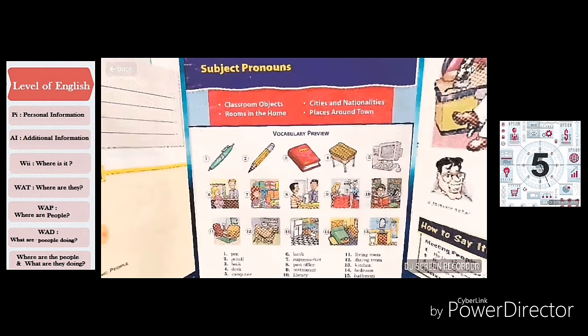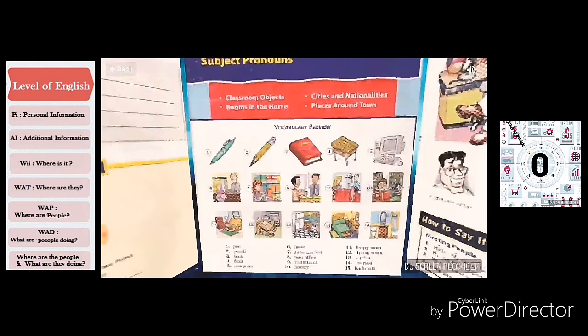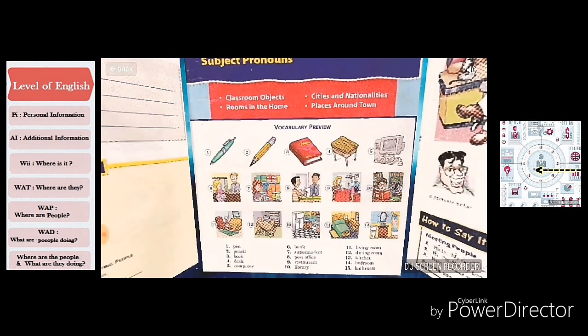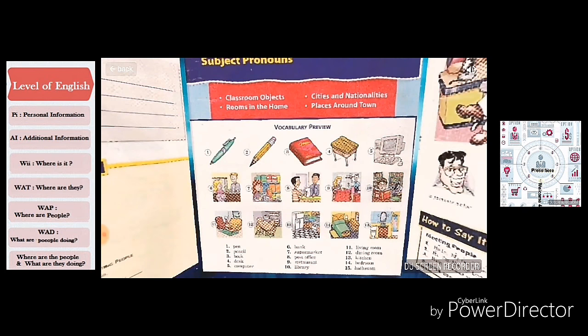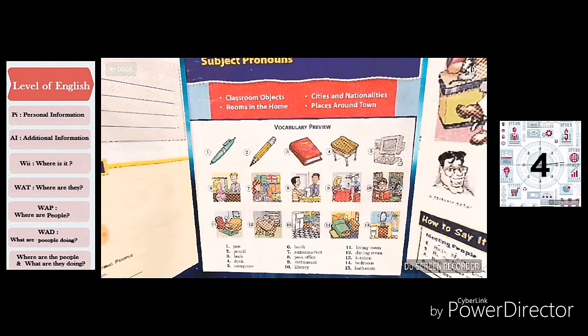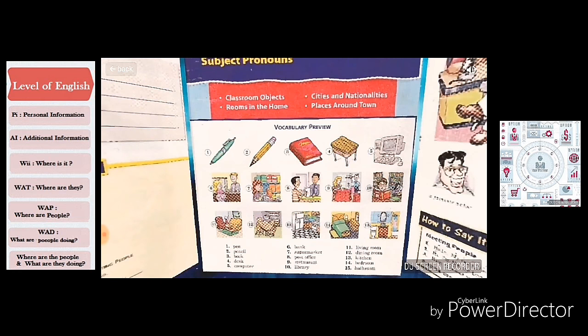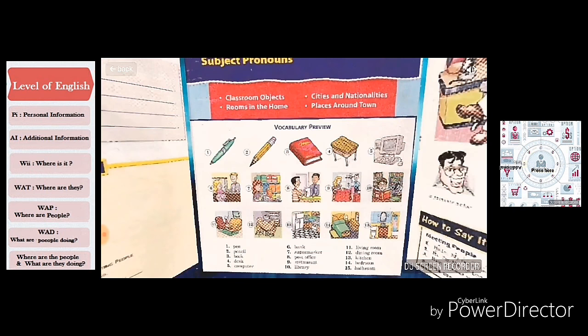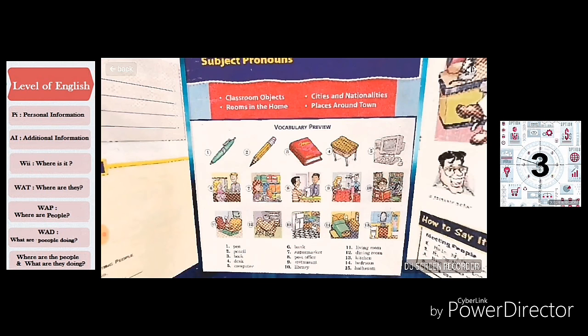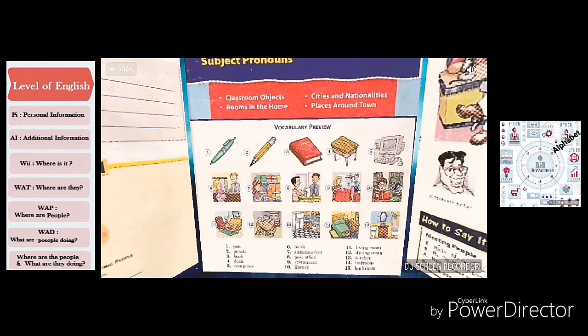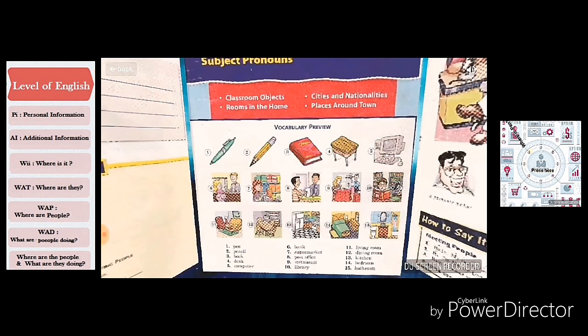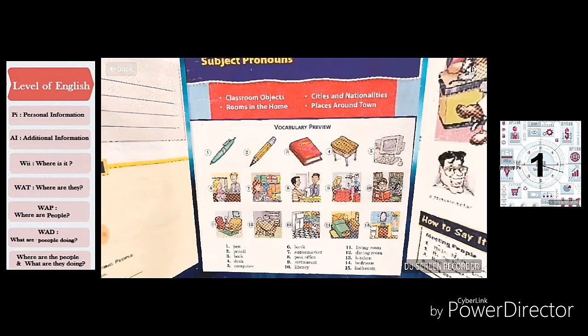Excuse me class, can you please help me? Please listen and no repeat. My name is Oscar and I'm going to present vocabulary, vocabulary preview. Pen, pencil, book, desk, computer, bank, supermarket, post office, restaurant, library, living room, dining room, kitchen, bedroom, and bathroom.